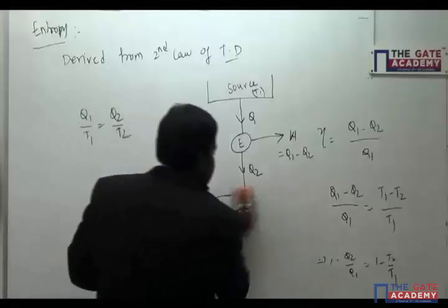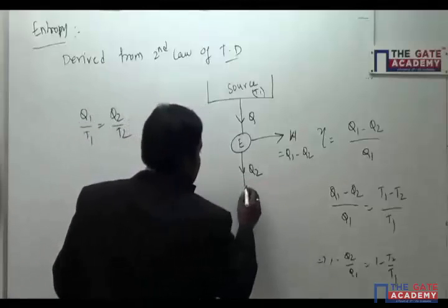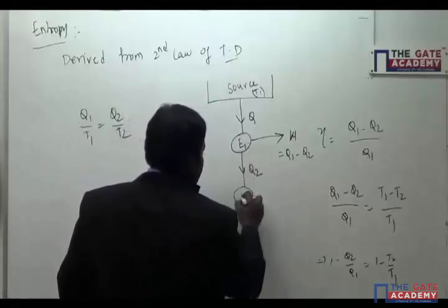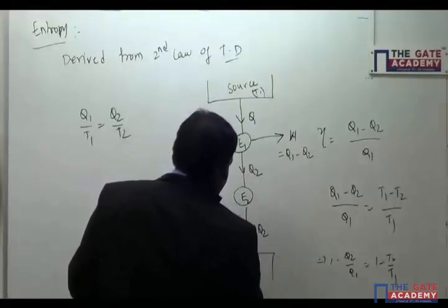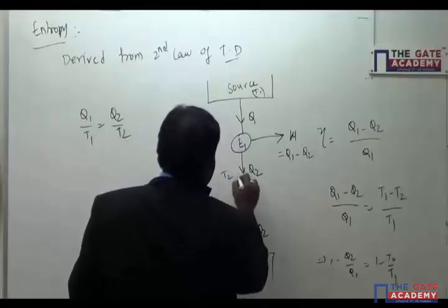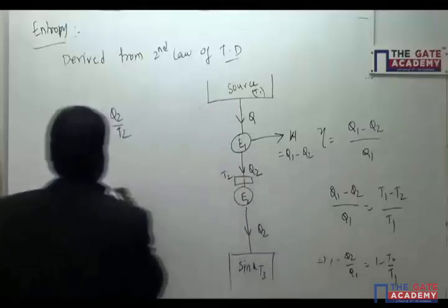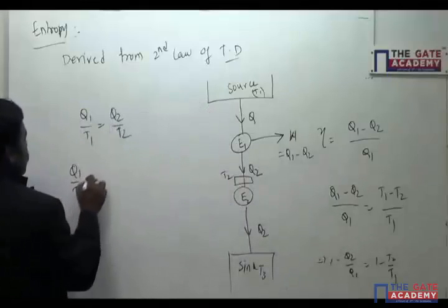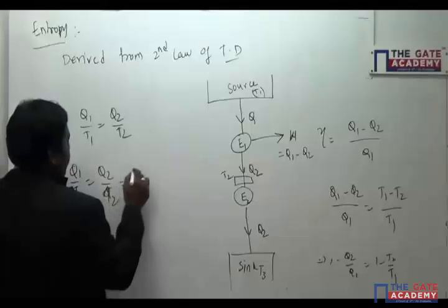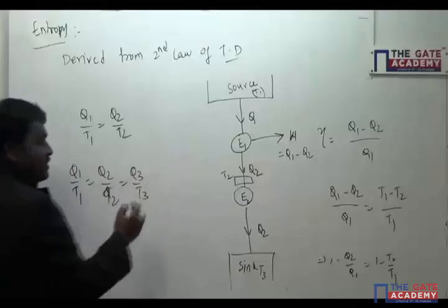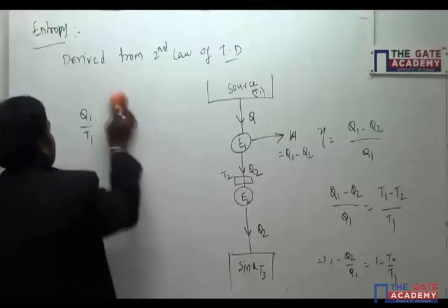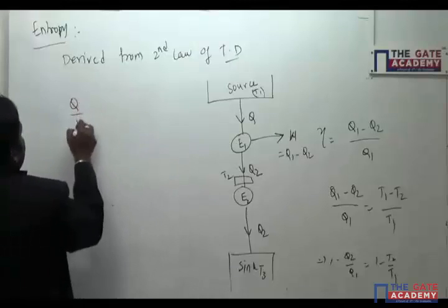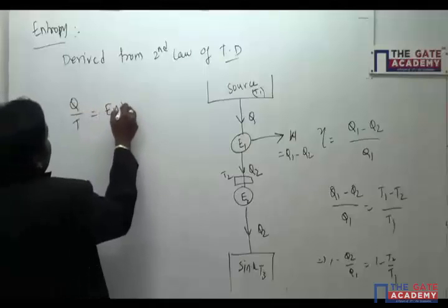When there are multiple engines — say E1 and E2 with sinks at T2 and T3 — we extend this to Q1/T1 = Q2/T2 = Q3/T3. This Q/T term is called entropy.